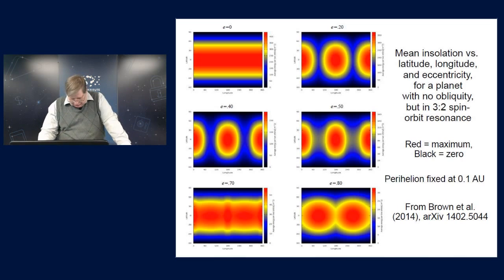But for an eccentricity of 20%, 0.20, like Mercury has, you can see that there are two hotspots on the equator where the planet's long axis is, and it's cooler in between with a short axis, and it falls down to zero at the poles.